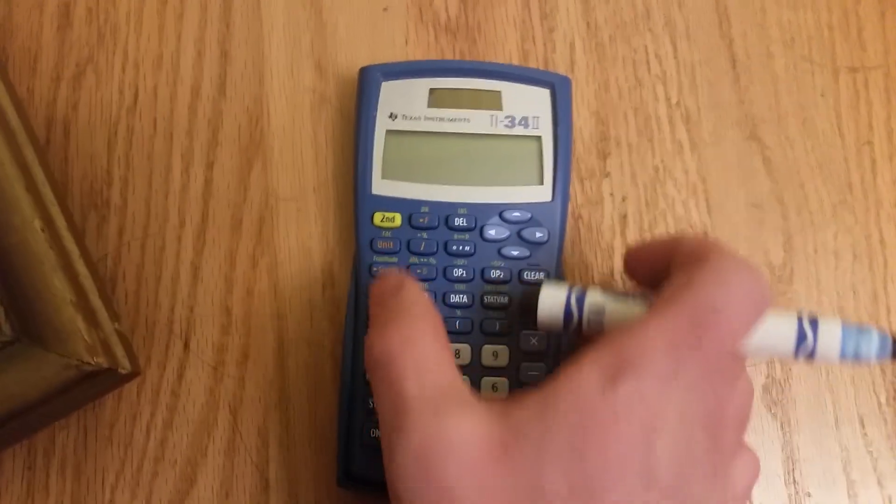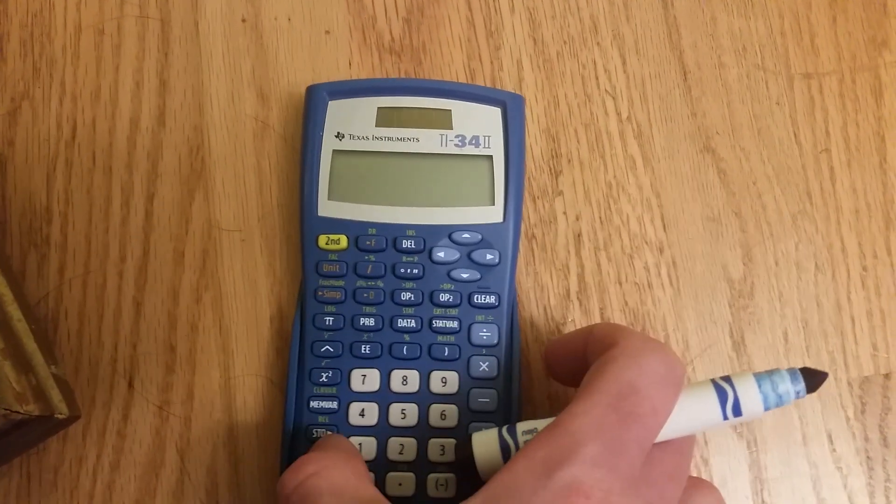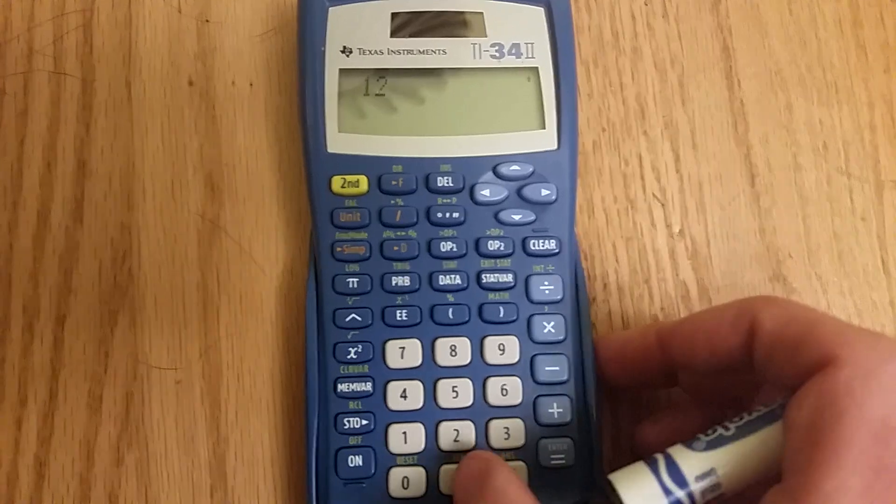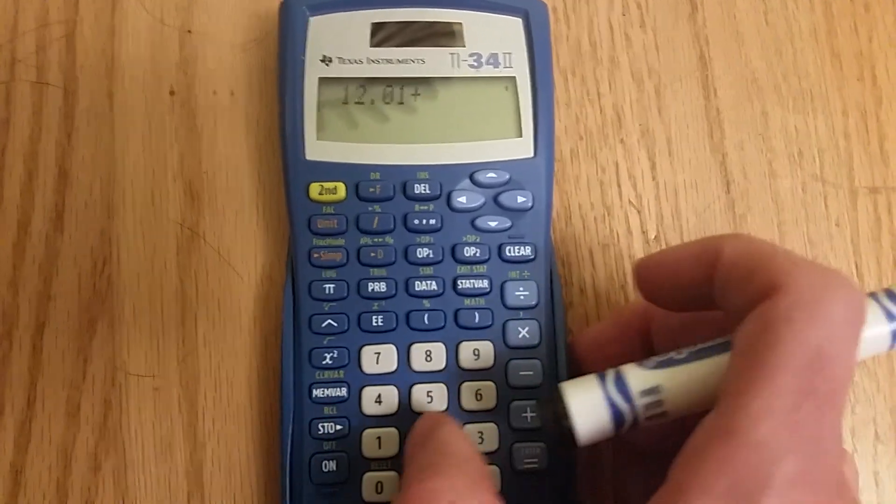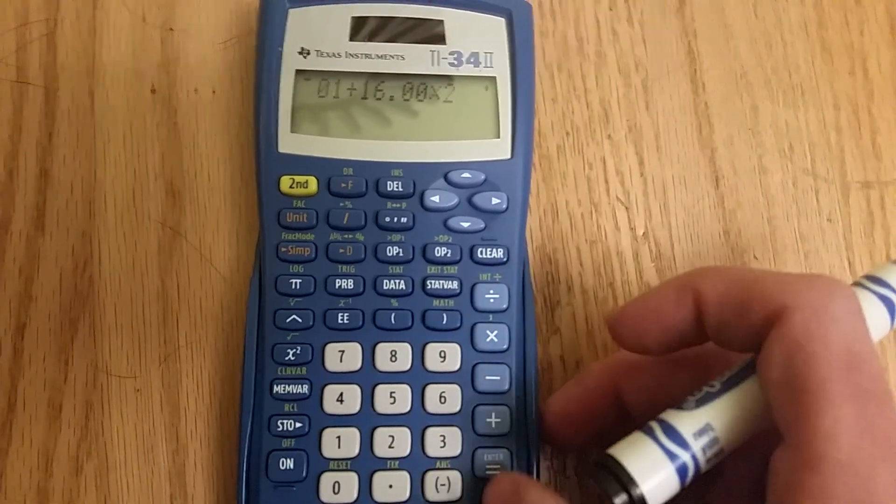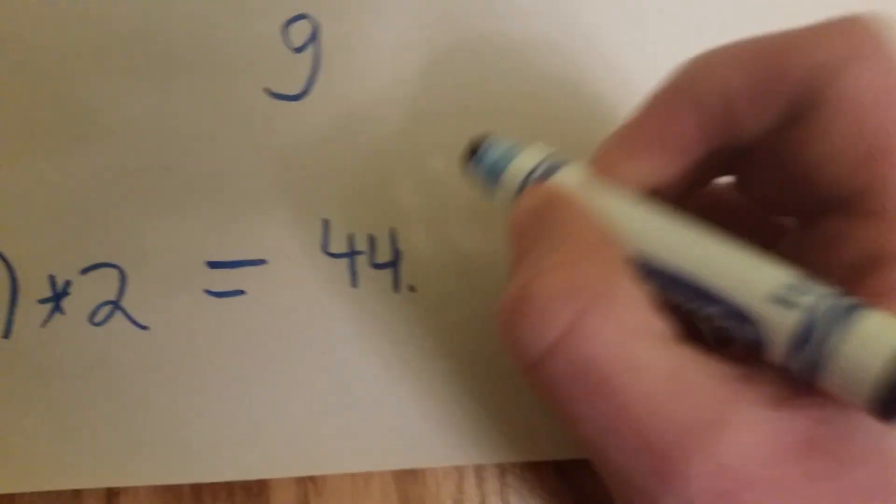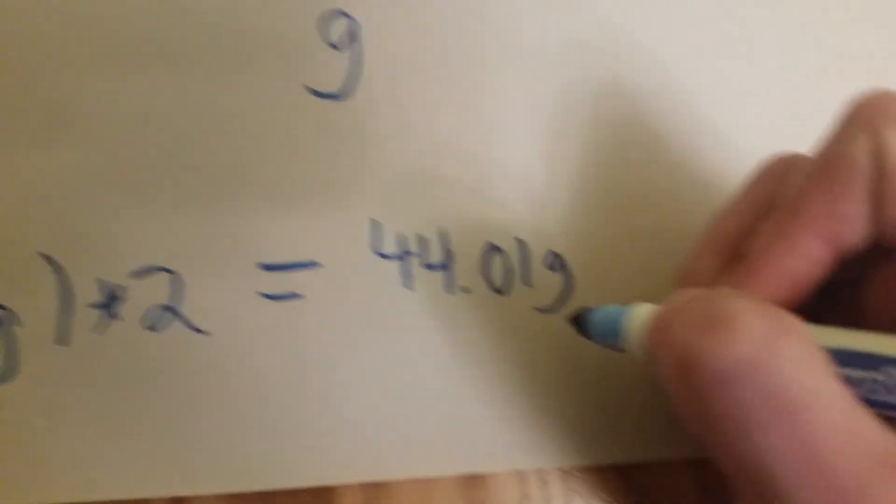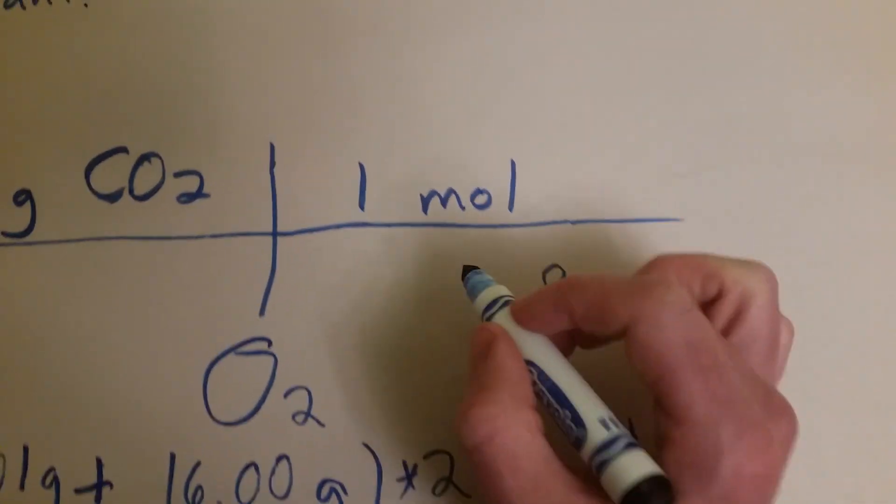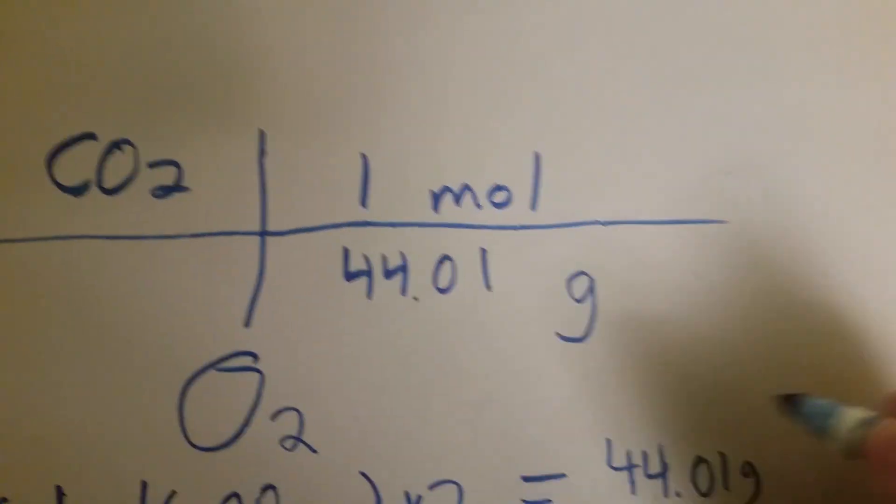So let's add that up with our handy dandy calculator. There we are. So let's go 12.01 plus 16.00 times 2. That equals 44.01 grams. So that's what one mole is going to equal here. 44.01 grams.